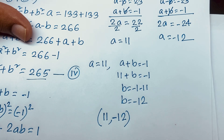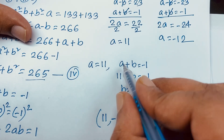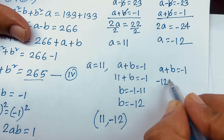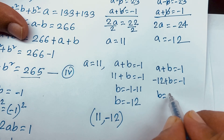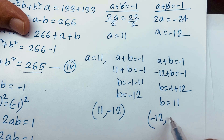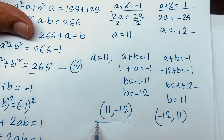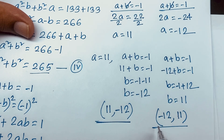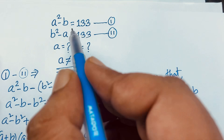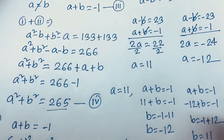When a equals 11, b equals minus 12. For the second case, with a equals minus 12: minus 12 plus b equals minus 1, so b equals minus 1 plus 12, giving b equals 11. So our two answers are: a equals 11 and b equals minus 12, or a equals minus 12 and b equals 11. If we substitute both answers into the original equations, both sides are equal. Thank you all — if you enjoyed this video, please subscribe to our channel and like this video. Goodbye, take care.